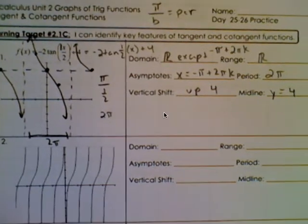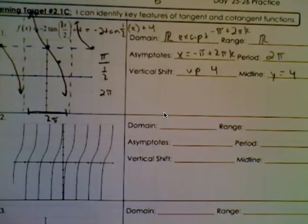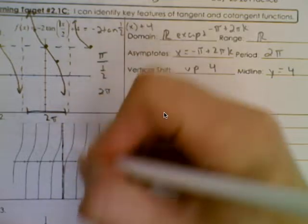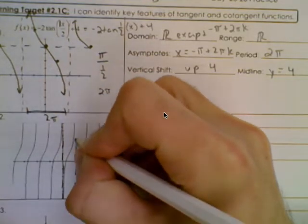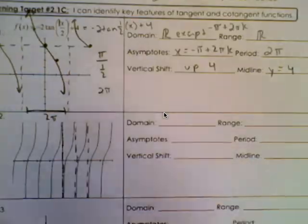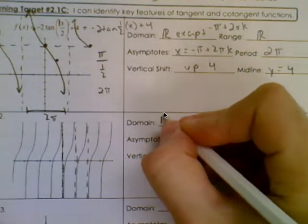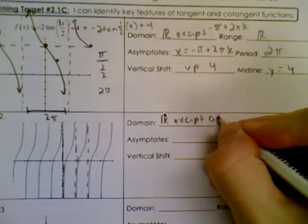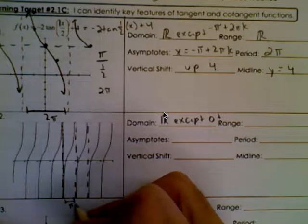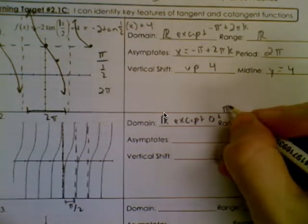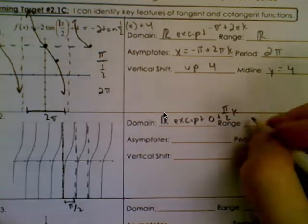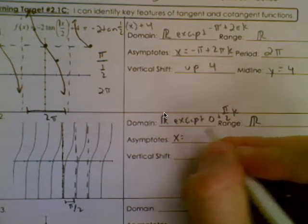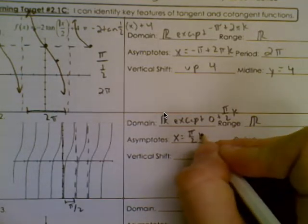For the next problem, we don't need to come up with an equation; we just need to look at the information given. It looks like there are asymptotes at 0, pi over 2, pi, etc. So we would say the domain is all real numbers except one asymptote location plus the distance between asymptotes, which is pi over 2, so plus pi over 2 k. The asymptotes are at x equals pi over 2 k.